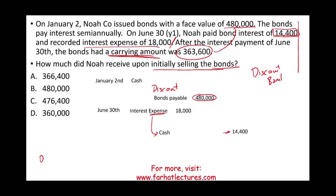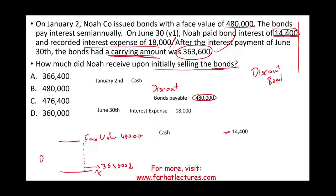What's going to happen to this discount bond? The face value is $480,000, and if this is a discount bond, it starts at some amount below face and goes up over time. We know six months later the carrying value is $363,600, and the question is how much was the bond issued for initially — which means six months earlier, the value must be less than $363,600. All I have to do is figure out how much discount was amortized on June 30th.